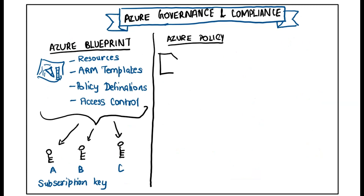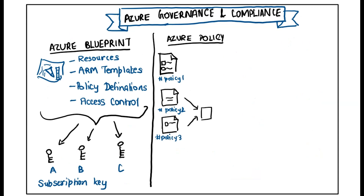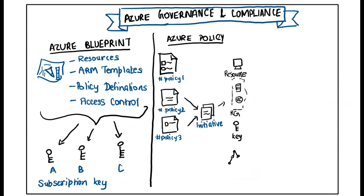The second is Azure Policy. It is a service in Azure that enables you to create, assign, and manage policies that can control or audit your resources. It enables you to define both individual policies and groups of related policies known as initiatives. Initiatives are created to track your compliance state for a larger goal. It evaluates your resources and highlights resources that are not compliant with the policies you have created, and also automatically remediates non-compliant resources and configurations to ensure integrity of the state of resources.